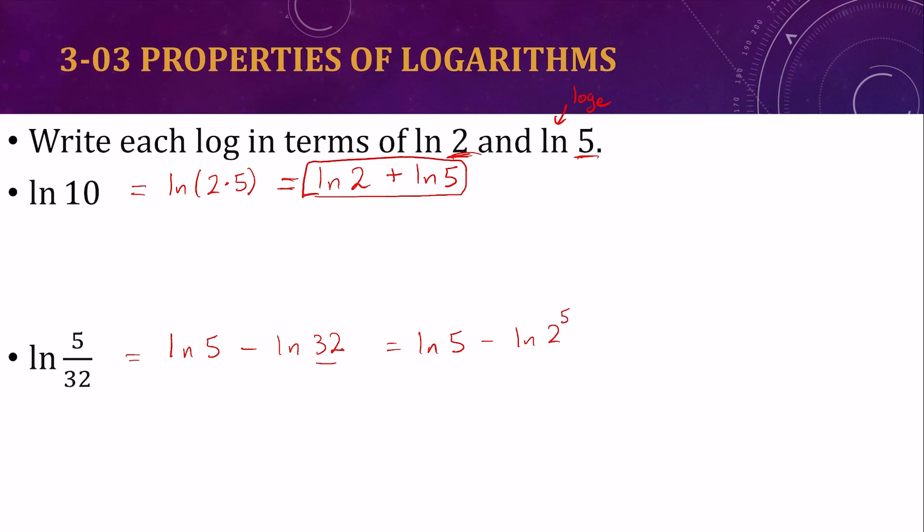So now I have an exponent inside my logarithm. The exponent can go in front of that logarithm. So I'll have natural log 5 minus 5 times the natural log of 2. And now we're all in natural logs of 5 and natural logs of 2.